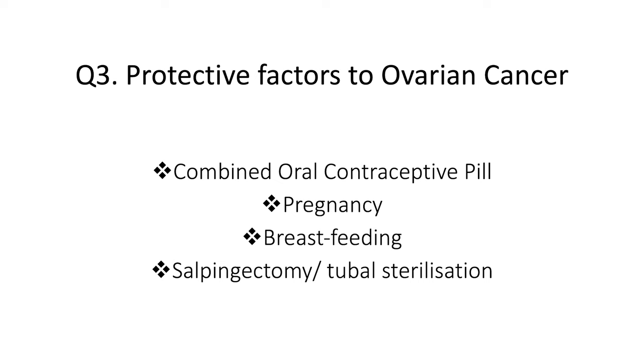There are also certain genetic predispositions that increase the risk of ovarian cancer, which we will look at in another question. Question 3: What are the protective factors for ovarian cancer? A simple rule is that the fewer the number of ovulation cycles, the lower the risk. Protective factors include the use of the combined oral contraceptive pill — which reduces risk by about 50% — pregnancy, breastfeeding, salpingectomy, and tubal sterilization.